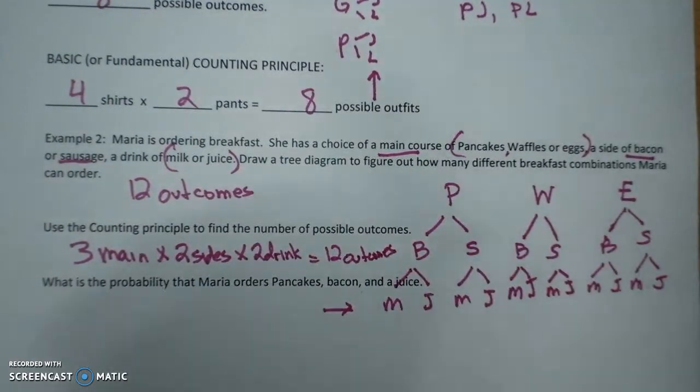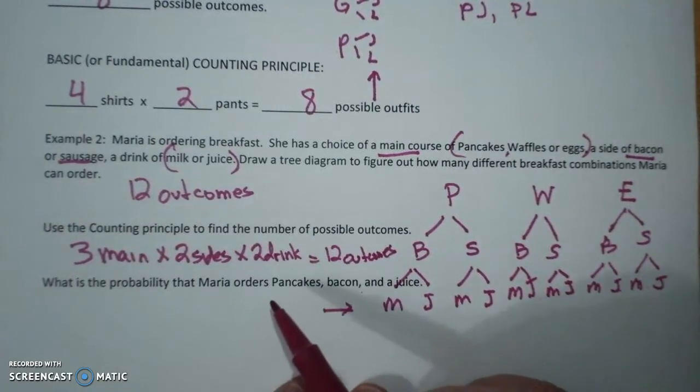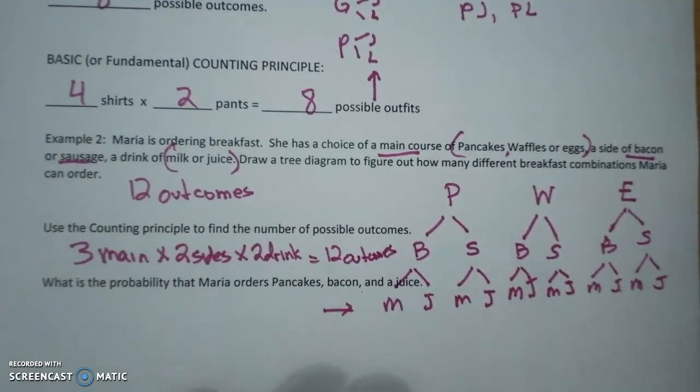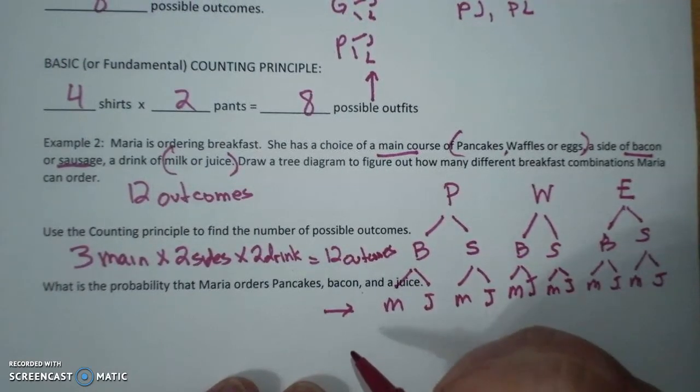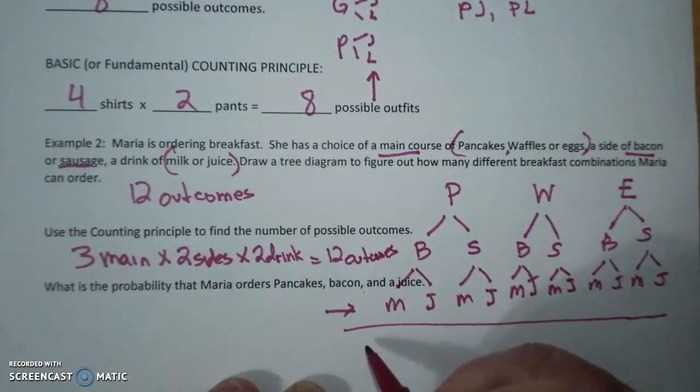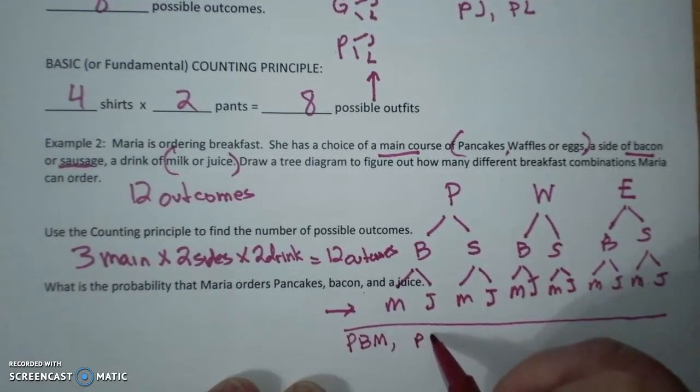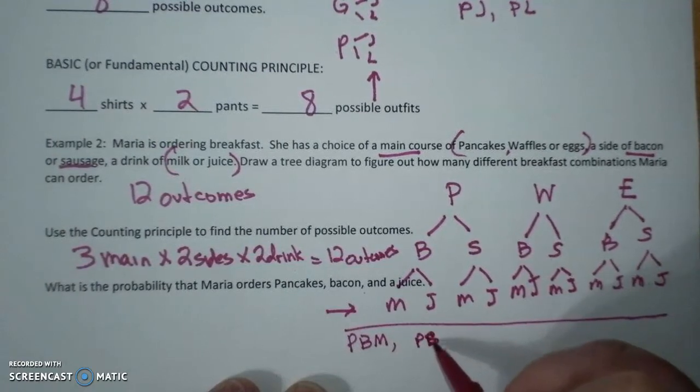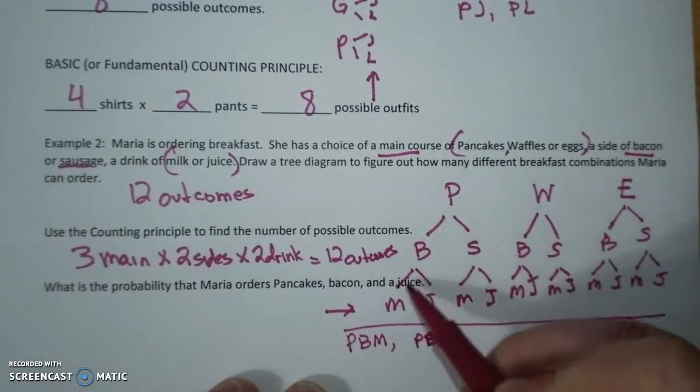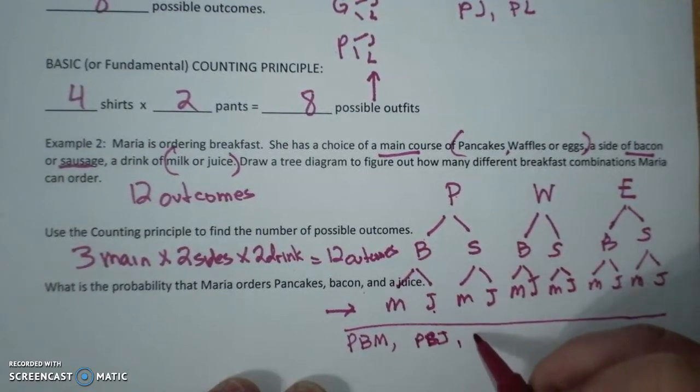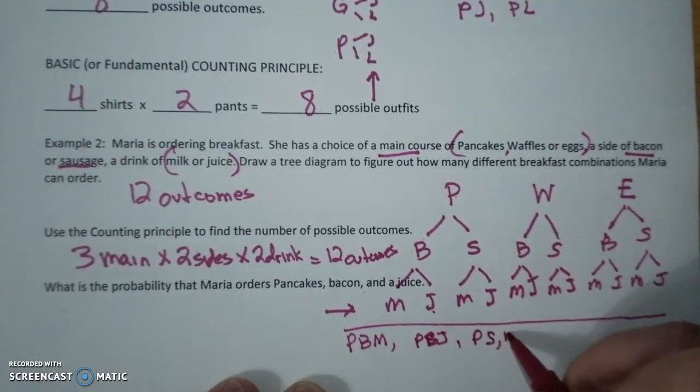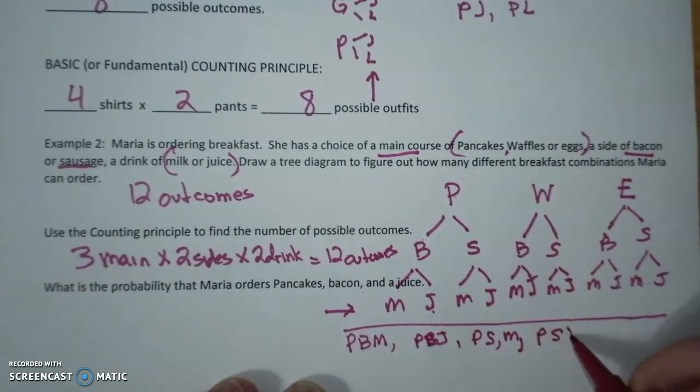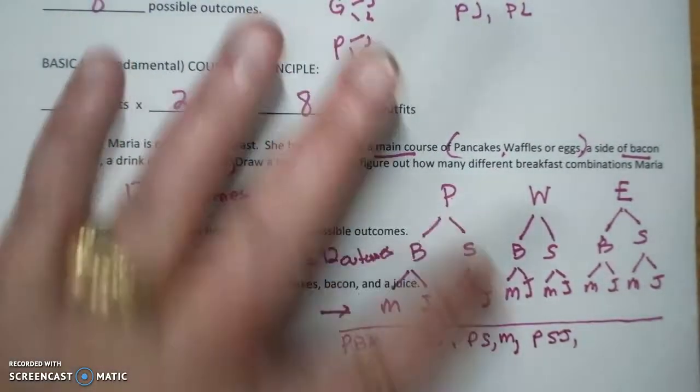I do them in order just because I am used to doing it in order. Here's my sample space. I can do pancakes, bacon, and milk. I can do pancakes, bacon, and juice. Pancakes, bacon, and milk. Pancakes, bacon, and juice. Pancakes, sausage, and milk. Pancakes, sausage, and juice.